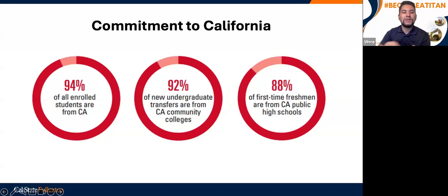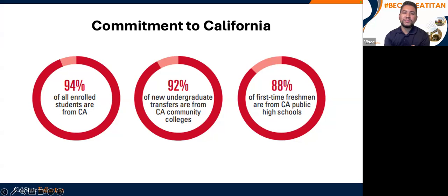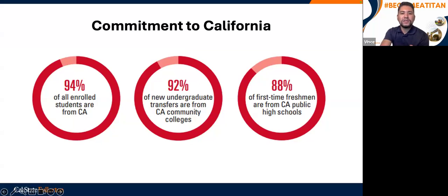The California State University System is committed to California residents and the state itself. 94 percent of all enrolled students are from California, 92 percent of new undergraduate transfers are from California Community Colleges, and 88 percent of first-time first-year students are from California public high schools. We pride ourselves in serving local students as well as a small number from outside California, nationally and internationally.